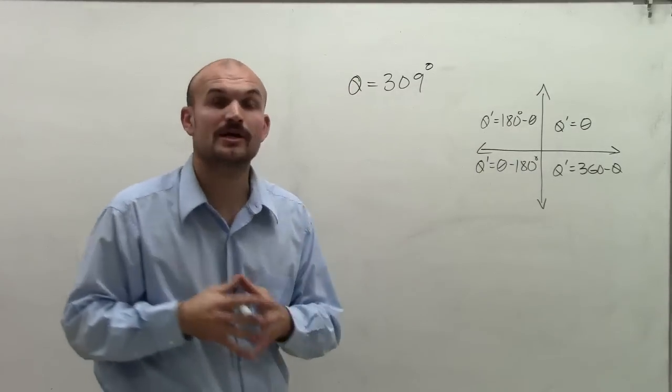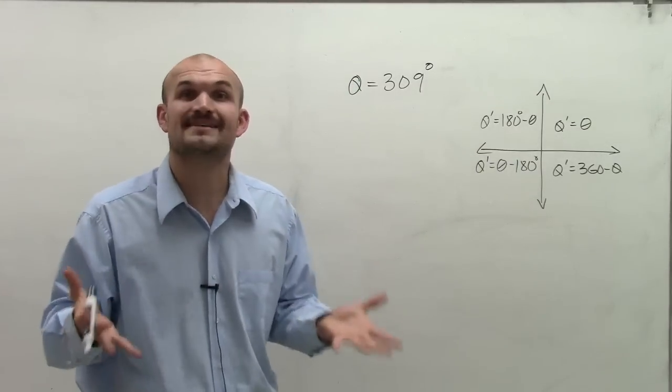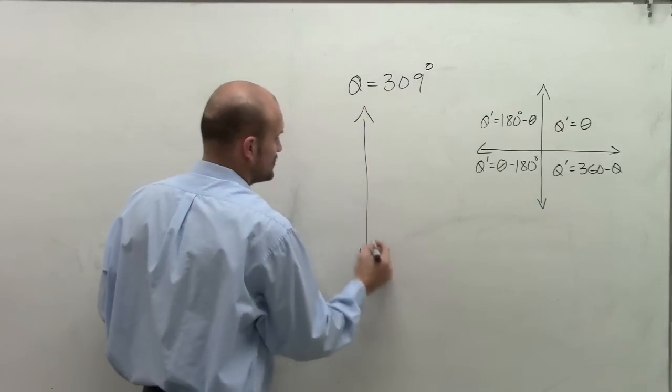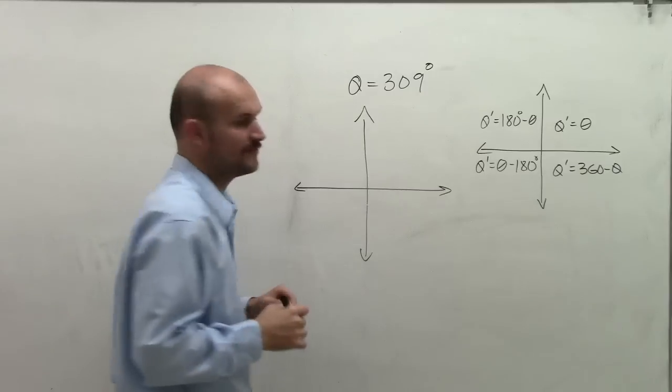So if I want to find the reference angle for 309 degrees, I need to know where exactly is 309 degrees. So the first thing I'm going to do is I'm going to sketch the graph in standard form.